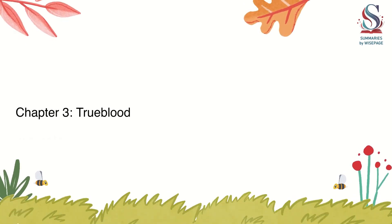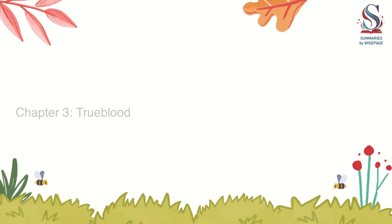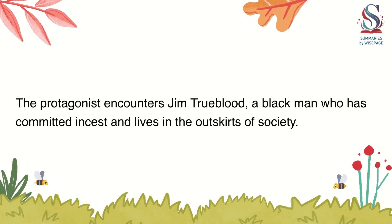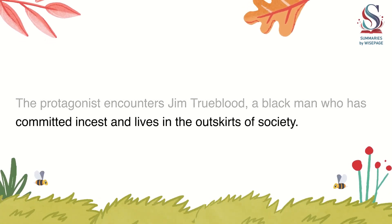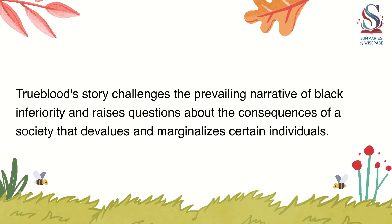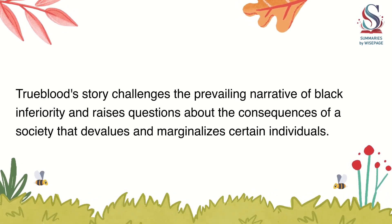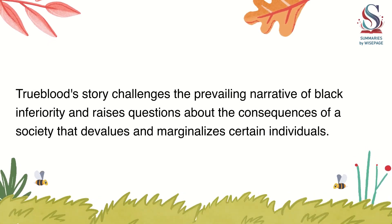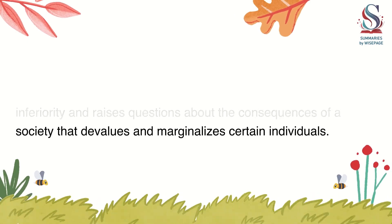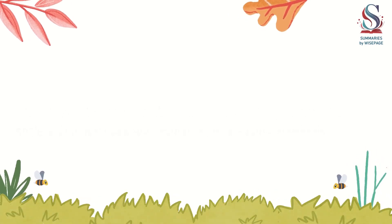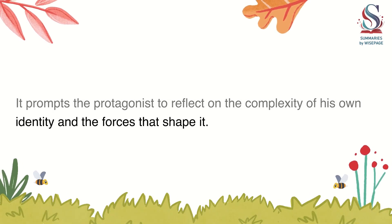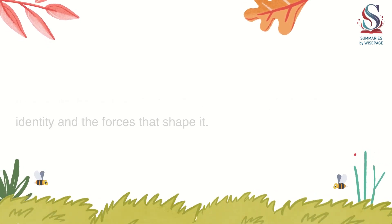Chapter 3: True Blood. The protagonist encounters Jim True Blood, a black man who has committed incest and lives in the outskirts of society. True Blood's story challenges the prevailing narrative of black inferiority and raises questions about the consequences of a society that devalues and marginalizes certain individuals. It prompts the protagonist to reflect on the complexity of his own identity and the forces that shape it.